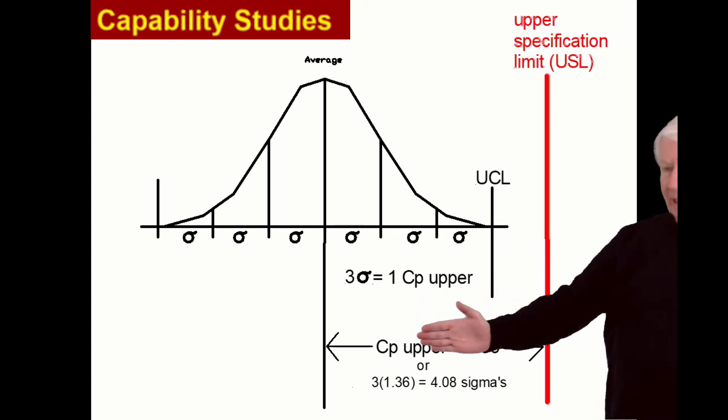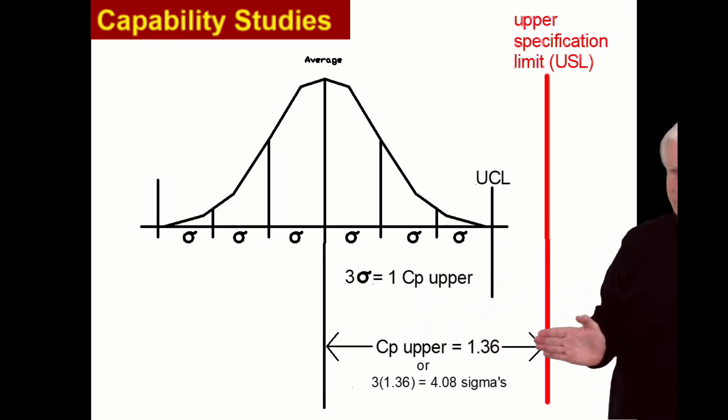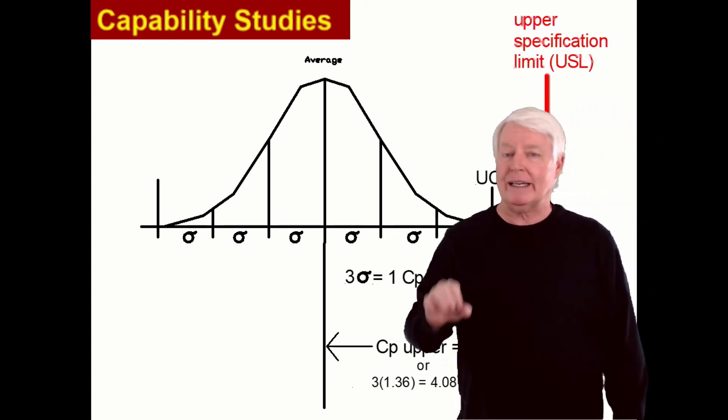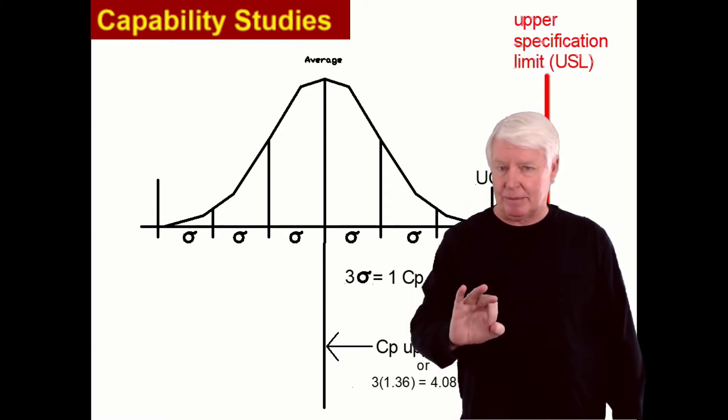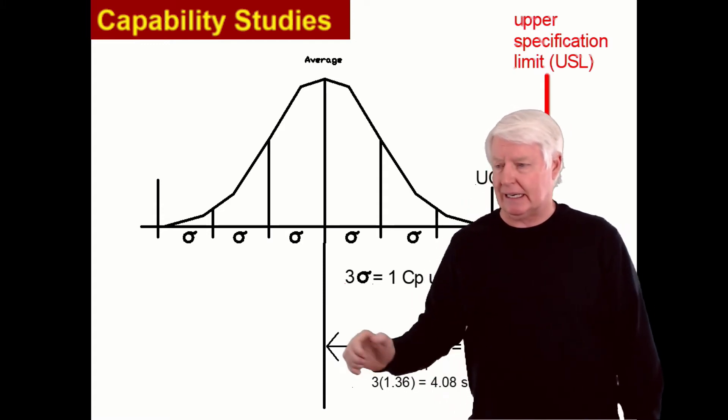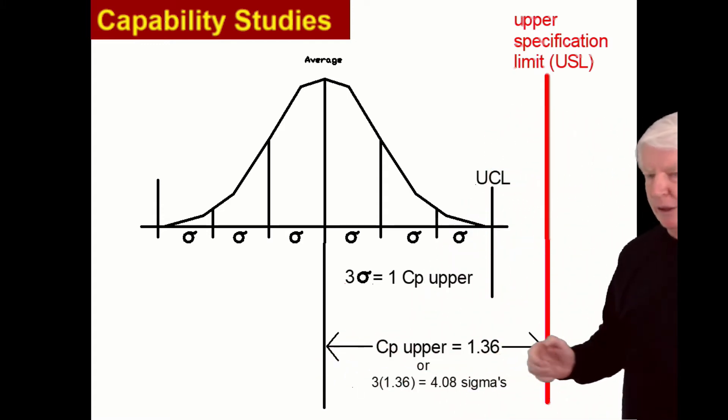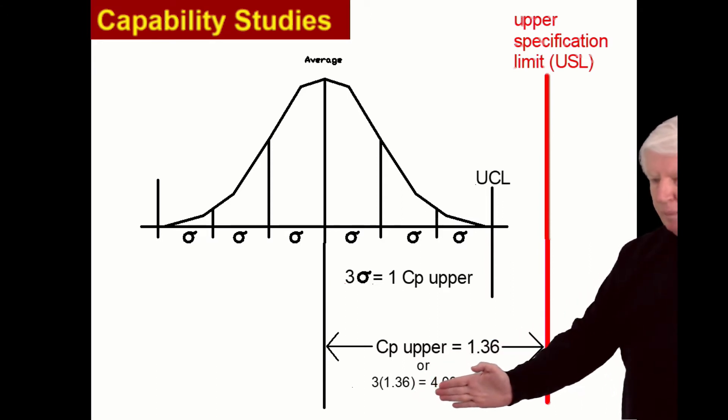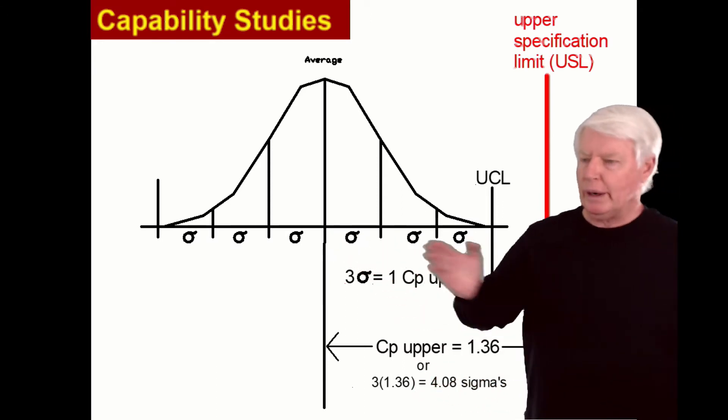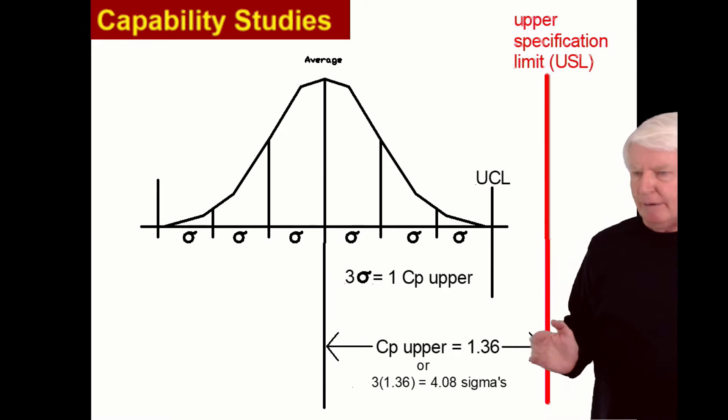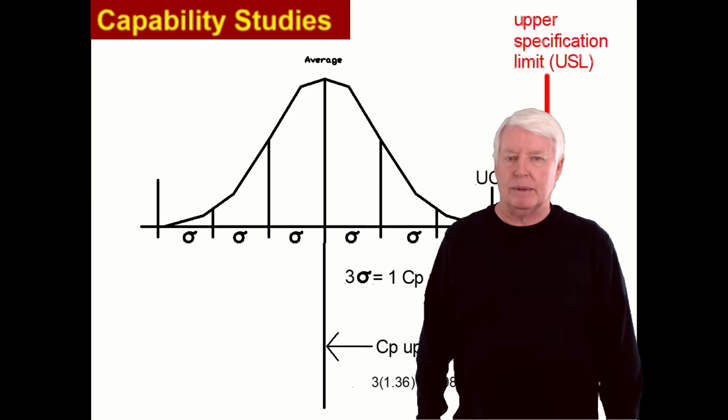So now I draw that out. Here's a CP upper of 1.36. By the way, if I want to convert that to the number of sigmas, which is the Z statistic, I just need to multiply that by three. So I did that: three times 1.36 equals 4.08 sigmas. So a CP of 1.36 means the same exact thing as 4.08 sigmas.